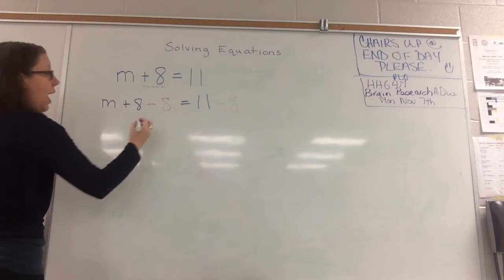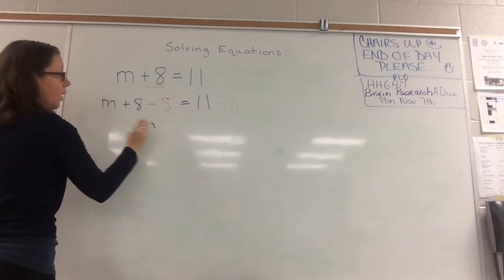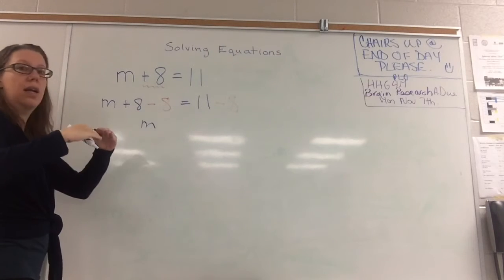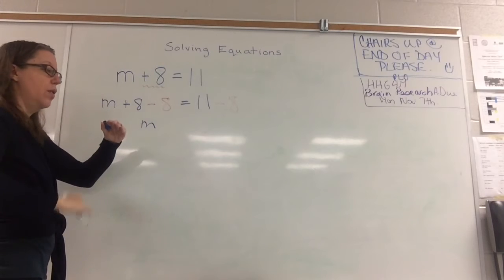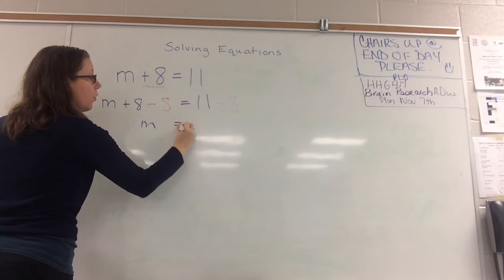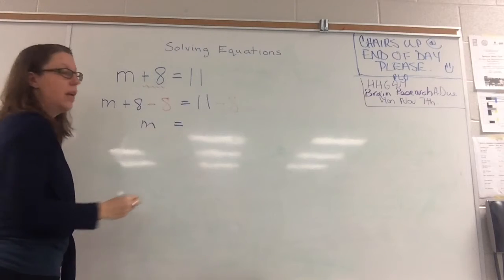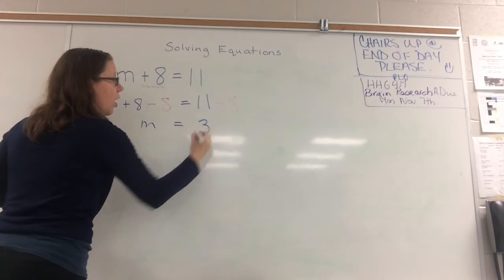What I get is m plus 8 and minus 8, they cancel each other out, they become 0. So m equals 11 minus 8, which is 3.